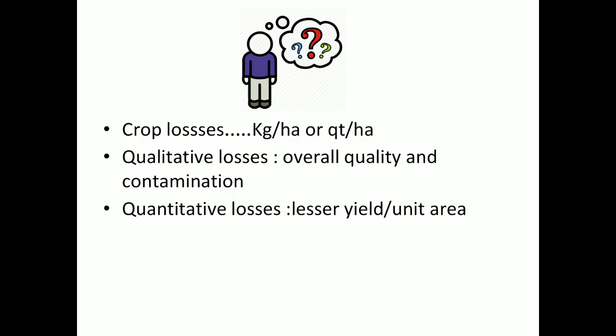Crop losses are measured in terms of kg per hectare or quintal per hectare. These are again divided into two types — qualitative losses and quantitative losses. In case of qualitative losses, the overall quality reduction or contamination is referred to as qualitative loss, while per unit area reduction in yield is referred to as quantitative loss.